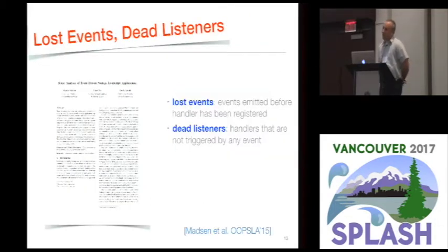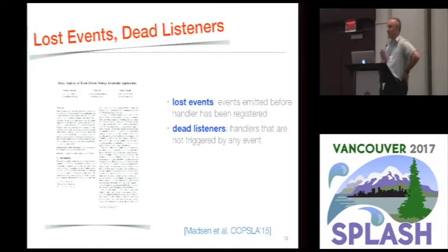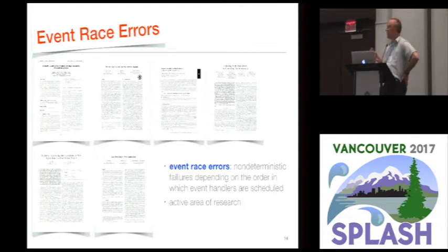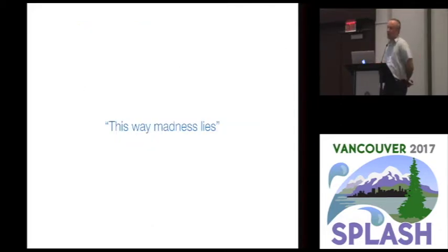There are further problems with event-driven programming, namely problems such as lost events and dead listeners, which we covered in an earlier OOPSLA paper. This happens when you emit an event before the handler has been registered, or if you mistype the name of an event, causing event handlers to become unreachable. And lastly, there are event race errors — a very active area of research — which happen when you have non-deterministic behavior depending on the order in which event handlers execute. So event-driven programming is a very problematic way of dealing with asynchrony, and that's where promises come in.